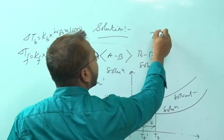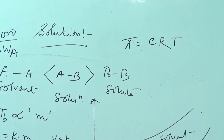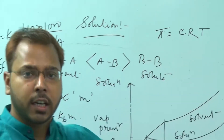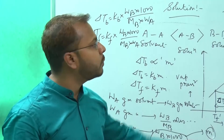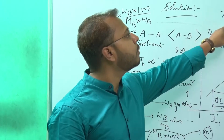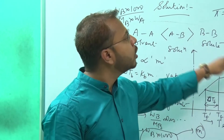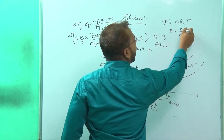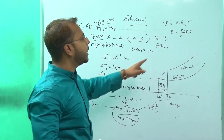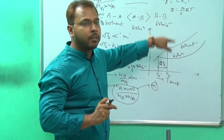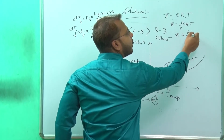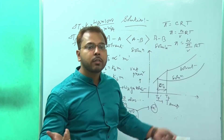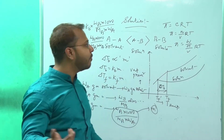We have the formula regarding osmotic pressure and the osmosis process: pi equals CRT, where C is the molarity — moles per litre. If V litres contains N moles, then C = N/V. Since N = W/M, we get pi = (W/M·V)·R·T. In a numerical, everything can be given and we can find the unknown — it may be M, W, or V.